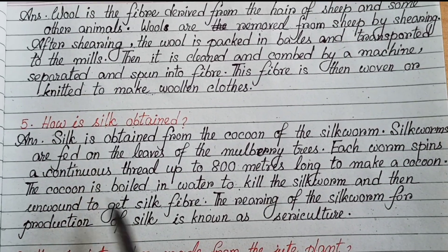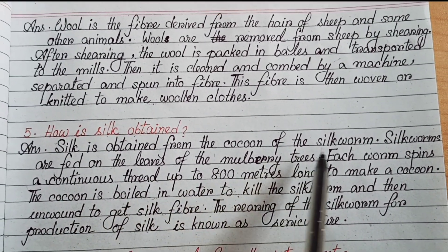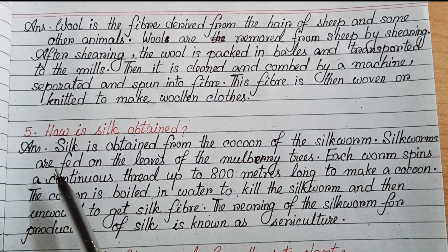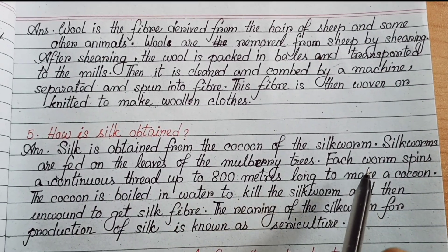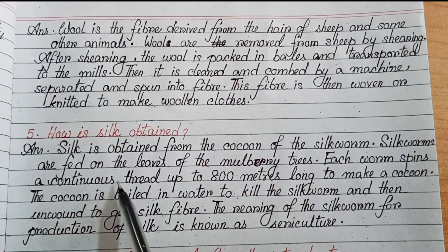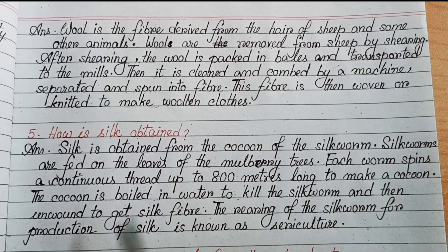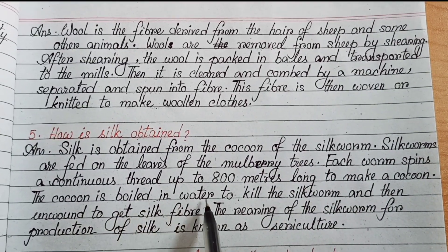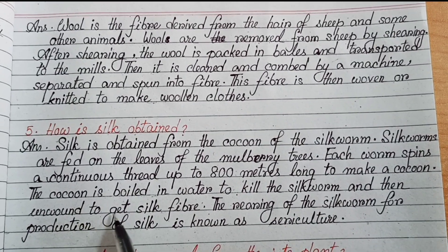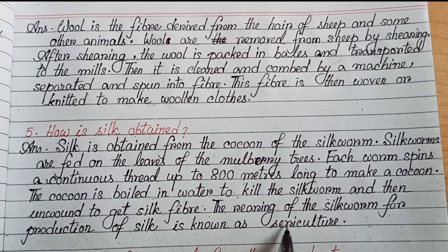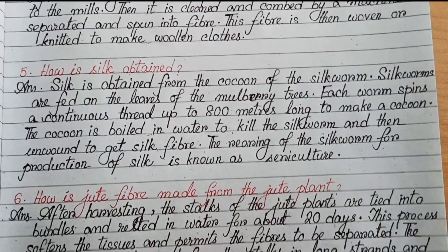Number 5: how is silk obtained? Silk is obtained from the cocoon of the silkworm. Silkworms are fed on the leaves of mulberry trees. Each worm spins a continuous strand up to 800 meters long to make a cocoon. The cocoon is boiled in water to kill the silkworm and then unwound to get silk fiber. The rearing of silkworms for the production of silk is known as sericulture.